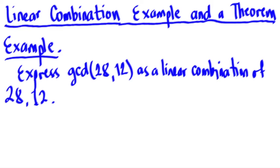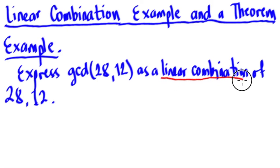So again, the theorem states that by Euler, the GCD of positive A and B is a linear combination of A and B. As an example, we will express the GCD of 28 and 12 as a linear combination of 28 and 12.